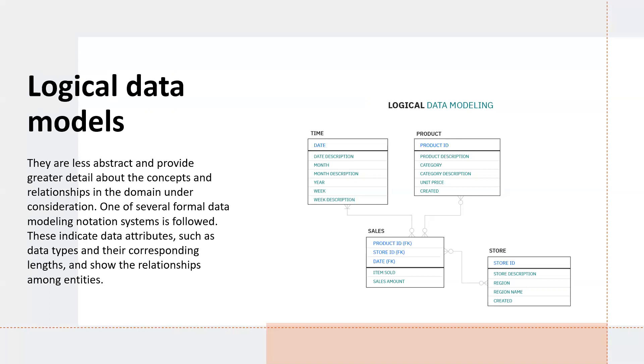One of several formal data modeling notation systems is used. These indicate data attributes such as data types and their corresponding length and show the relationships among entities. Logical data models don't specify any technical system requirements. Logical data models can be useful in highly procedural implementation environments or for projects that are data-oriented by nature, such as data warehouse design or reporting system development.